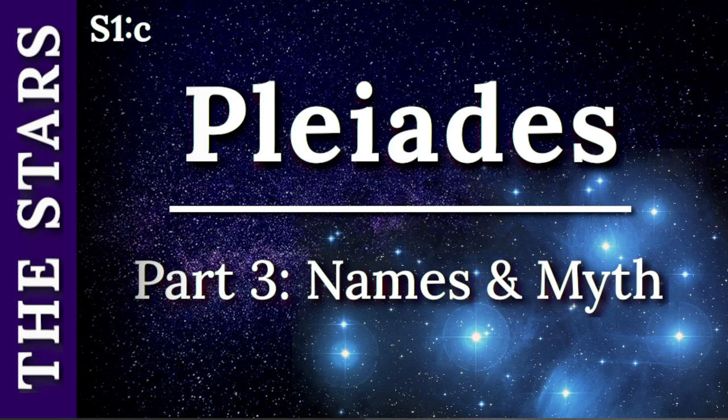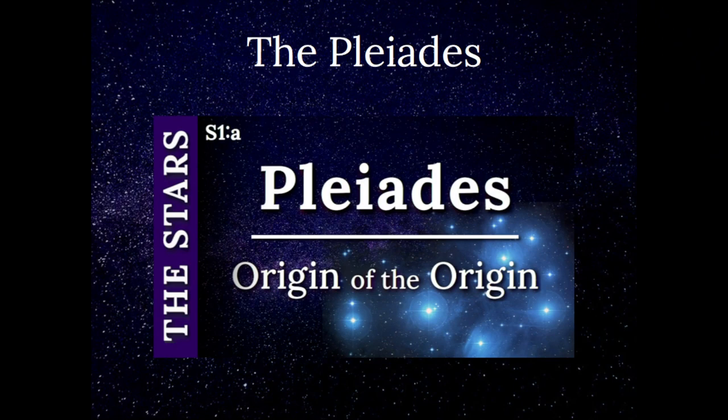Welcome back to this third part of three videos about the Pleiades. My name is Hugh Evans, author of 'Origin of the Zodiac.' If you haven't already done so, I invite you to please see the other two videos ahead of this one so that you will gain a better understanding. The first video was about the origin and it relates to where the Pleiades is in the night sky and how important it is with regard to the constellations all about.